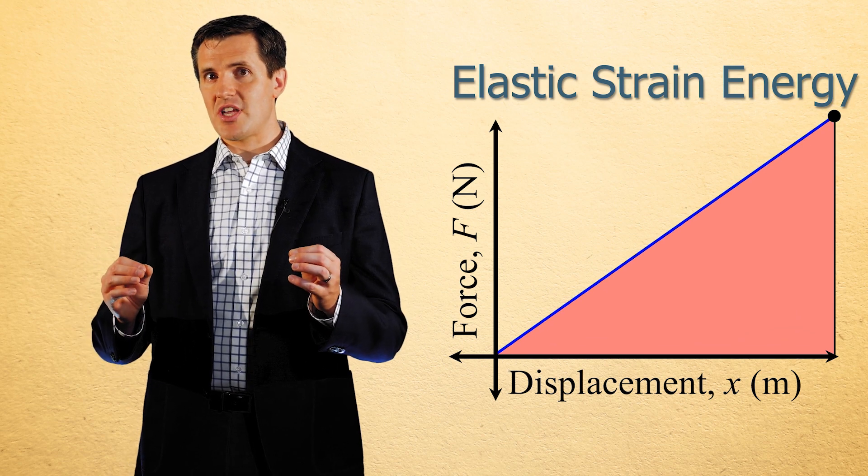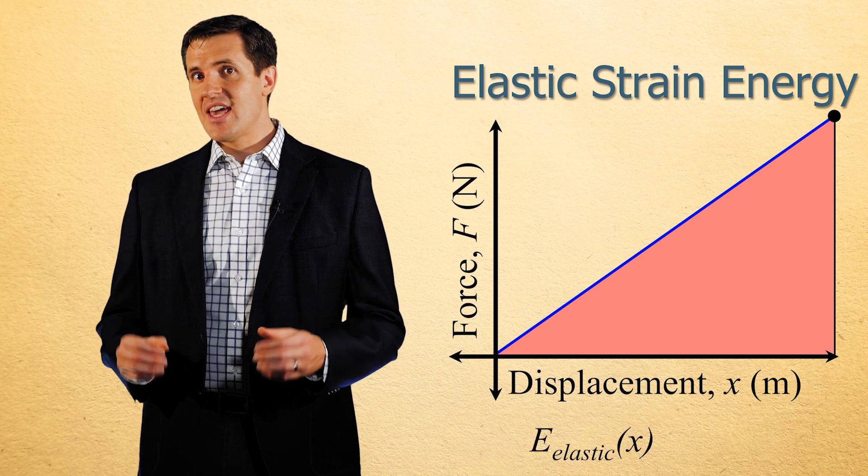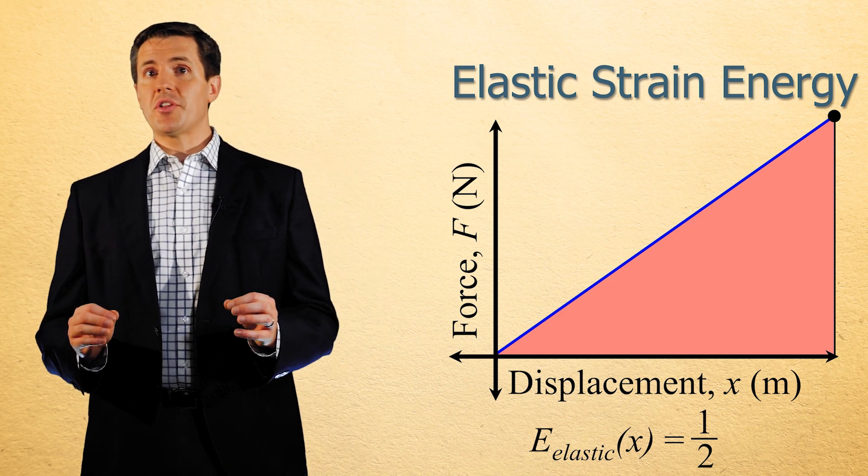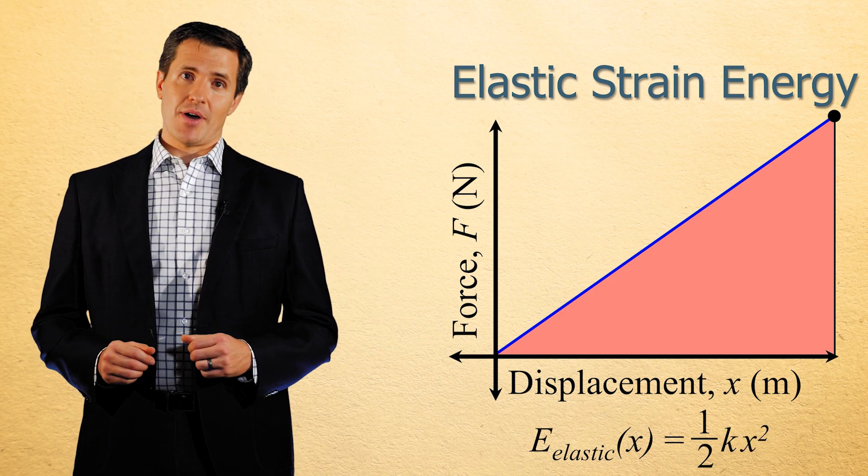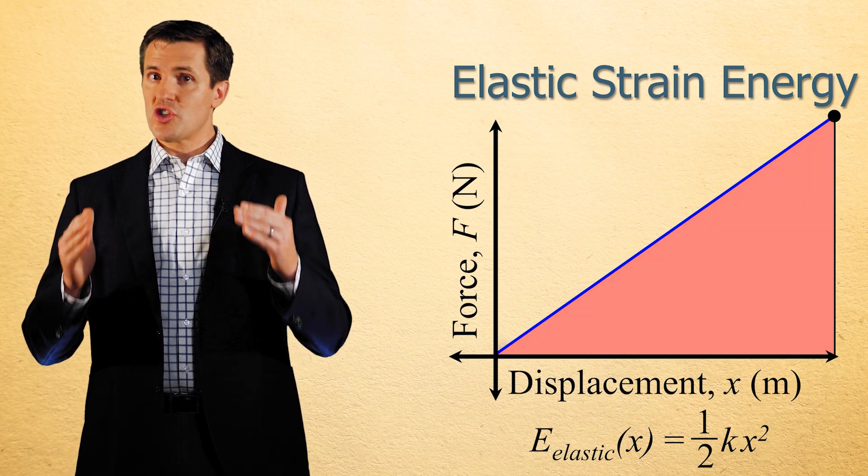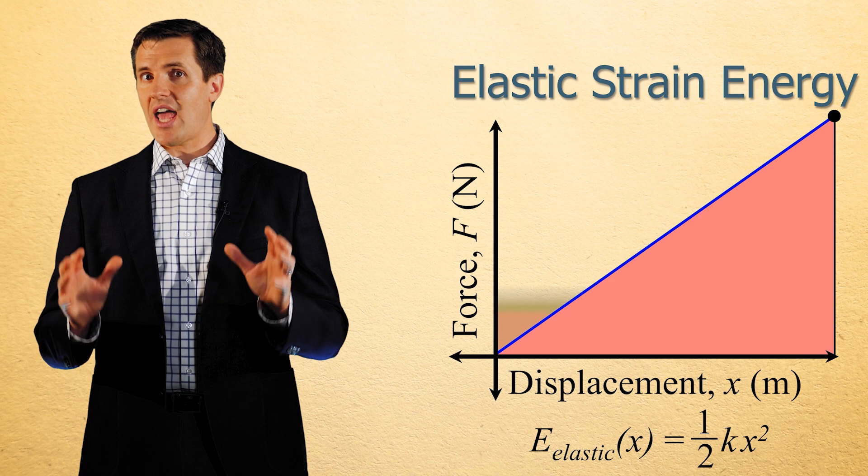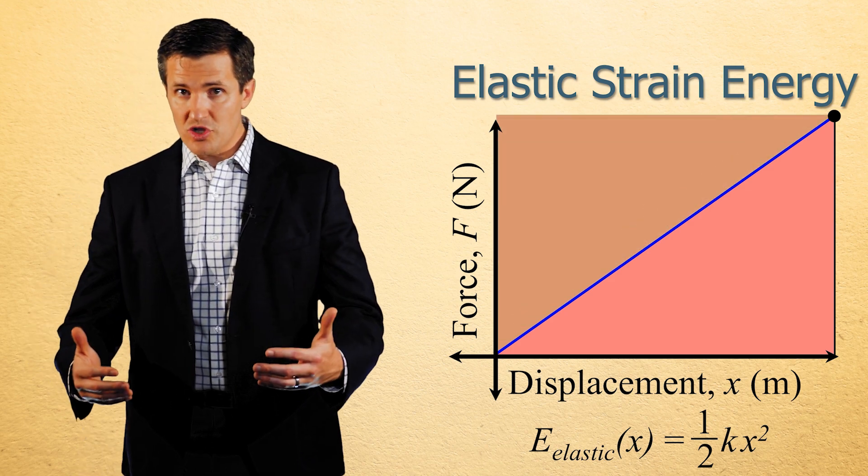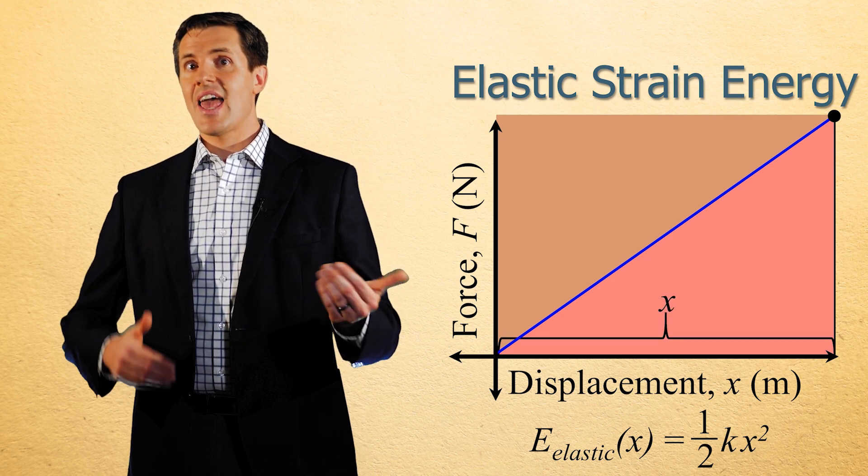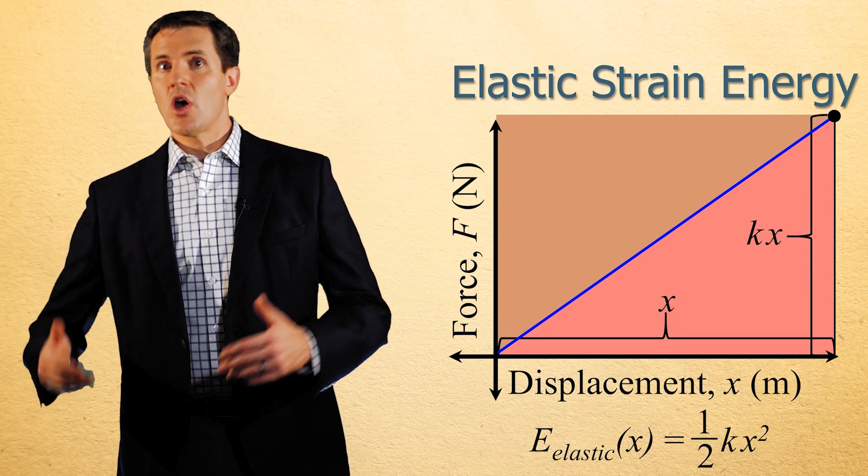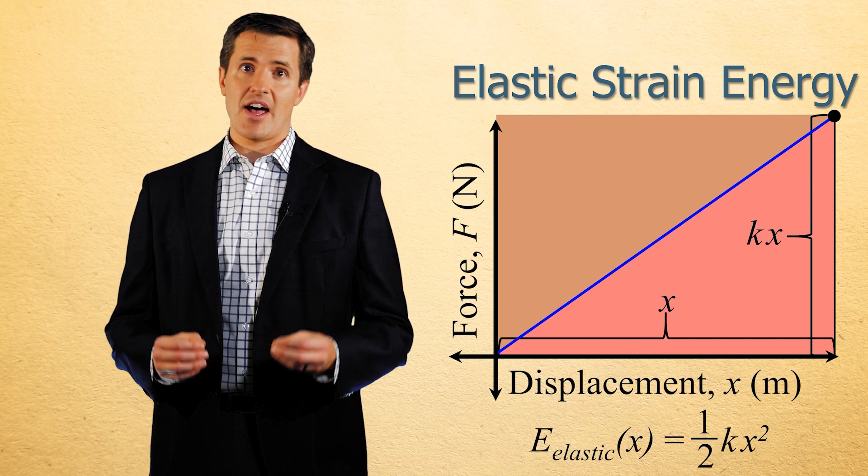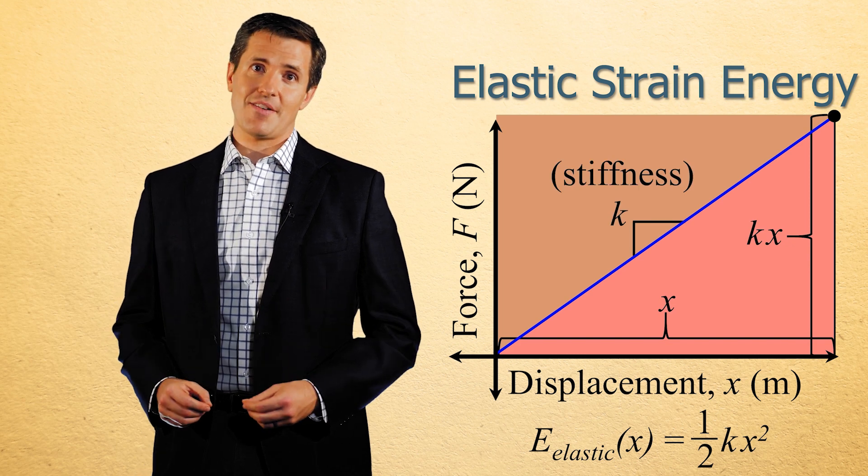Note that in the case of a linear spring, the elastic strain energy stored in its geometry, E_elastic, is the famous equation E_elastic equals one-half multiplied by k multiplied by x-squared, because the triangular area under the spring's straight-line force displacement plot is one-half of the area produced by multiplying the lengths of the two orthogonal sides of the triangle, x and k multiplied by x, where x is the amount that the spring has displaced and k is the value of the linear spring's constant stiffness.